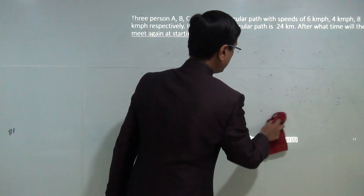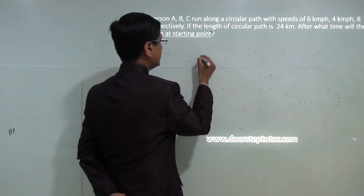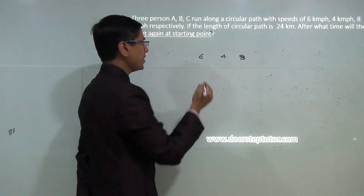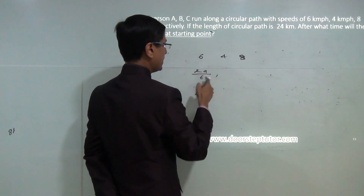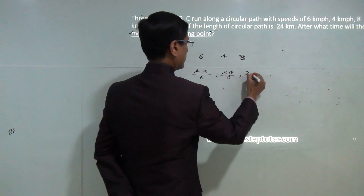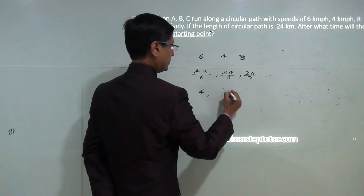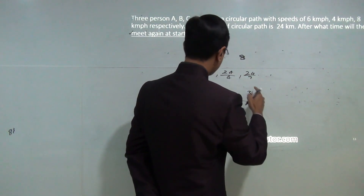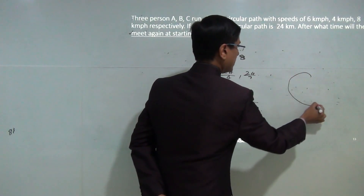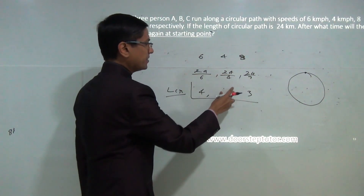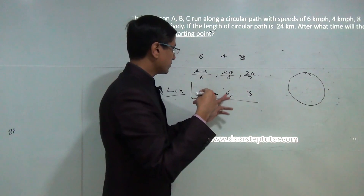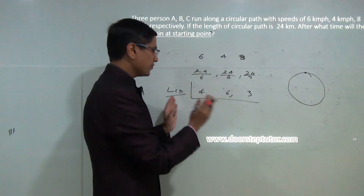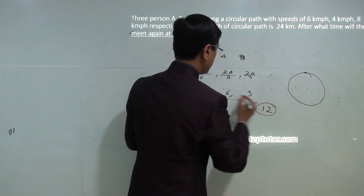Now with three racers running at 6, 4, and 8 kilometers per hour on the same 24-kilometer track: to find when they all meet at the starting point, compute how often each reaches the starting point. Racer at 6 km/h arrives every 4 hours, racer at 4 km/h every 6 hours, racer at 8 km/h every 3 hours. The LCM of 4, 6, and 3 is 12, so they all meet at the starting point after 12 hours.